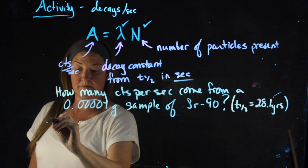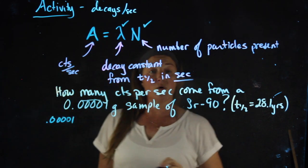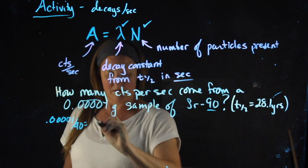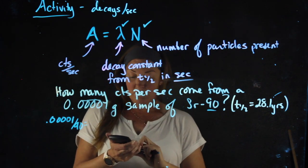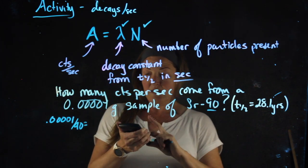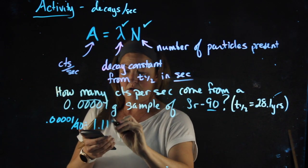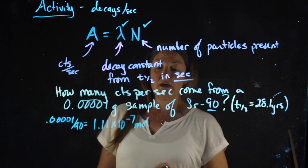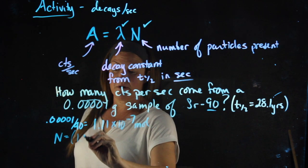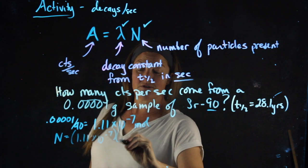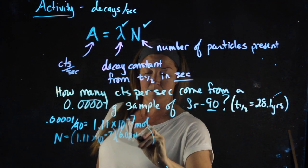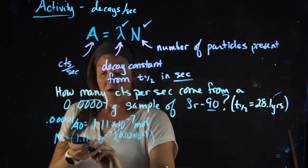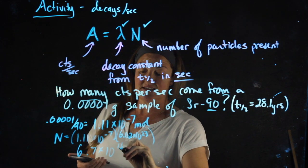So to get the number of atoms, I'm going to take the grams, I'm going to convert it to moles by dividing by the molecular weight. So 0.00001 divided by 90 gives me 1.11 times 10 to the negative 7th moles. To get the number of atoms, I'm then going to take that number and multiply by Avogadro's number, or 6.7 times 10 to the 16th atoms.